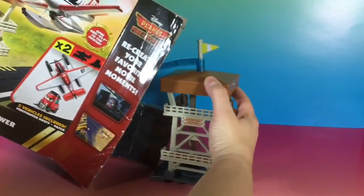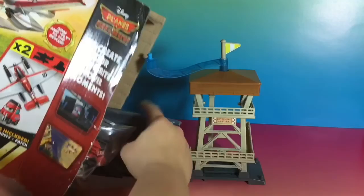Okay, so it looks like we got the tower and the landing strip. Let's see, there's Dusty and Patch, and we got instruction booklet.